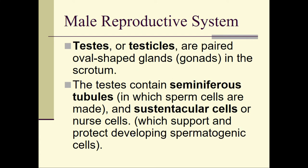The testes or testicles are paired oval-shaped gonads housed in the scrotum. The testes contain the seminiferous tubules, and this is where sperm cells are made. These are the products of meiosis — the process where one diploid cell divides twice and gives us four haploid, or half-chromosome-number, cells. Those cells are then grown through the process of spermatogenesis into sperm cells.